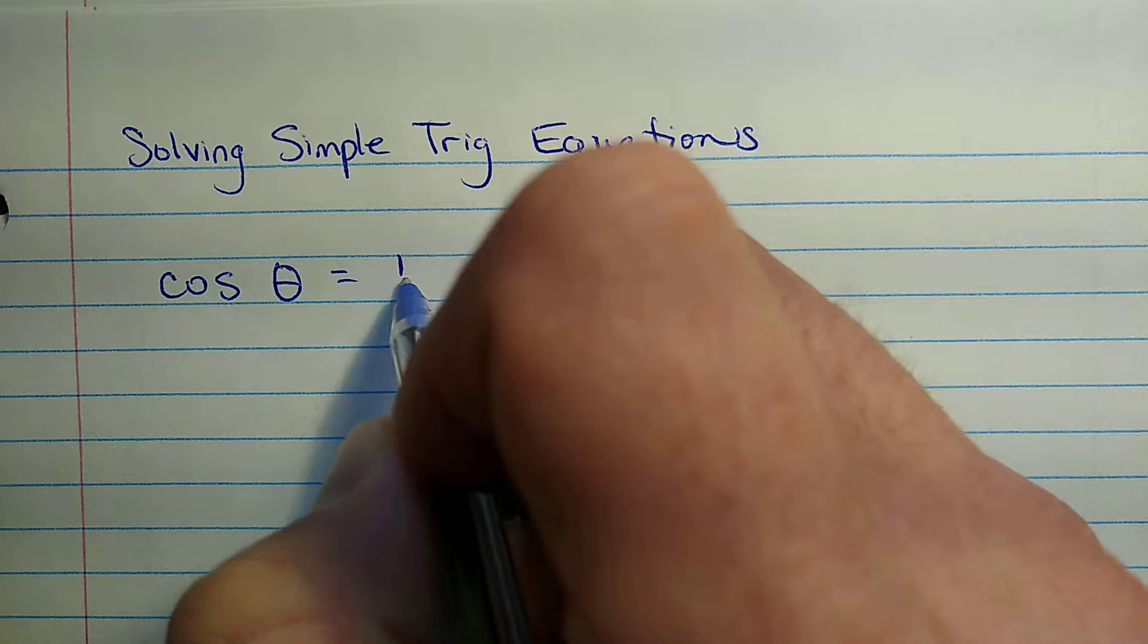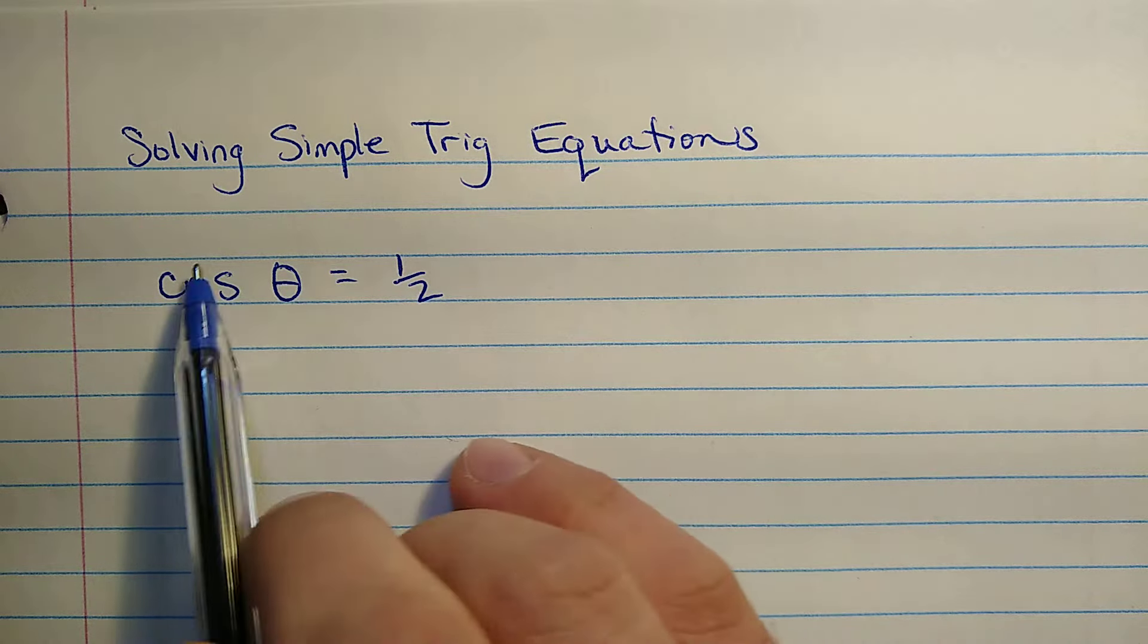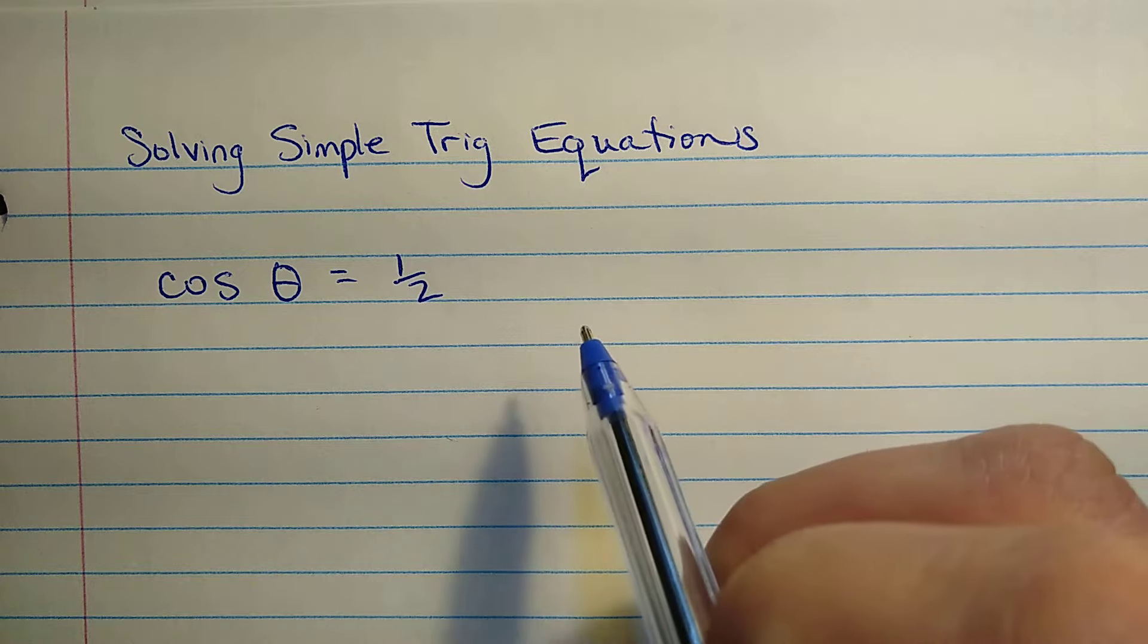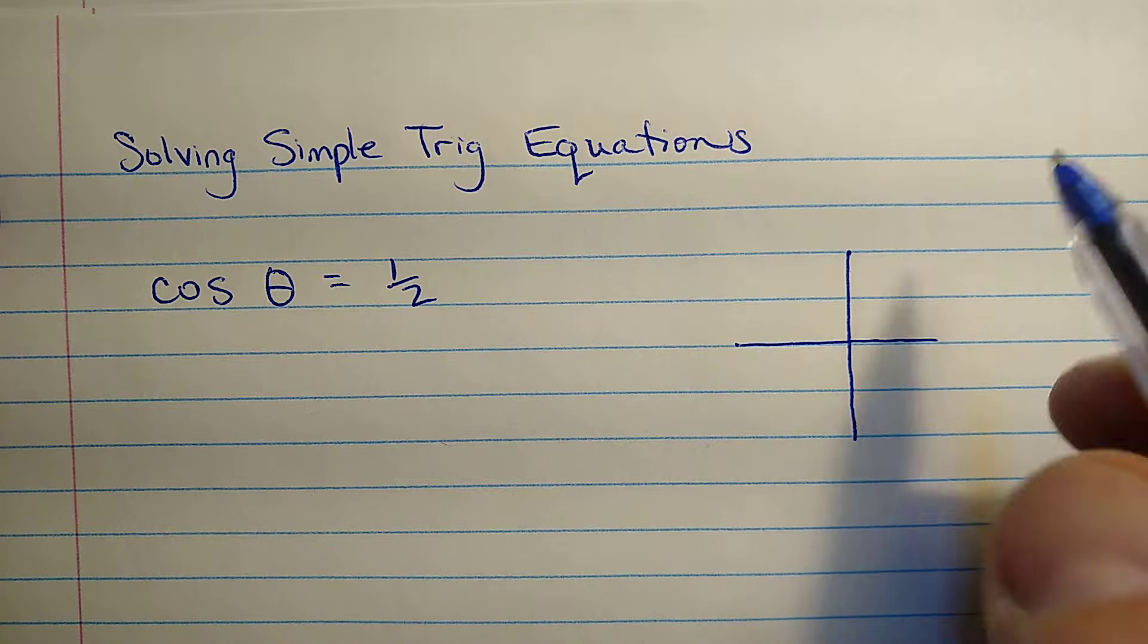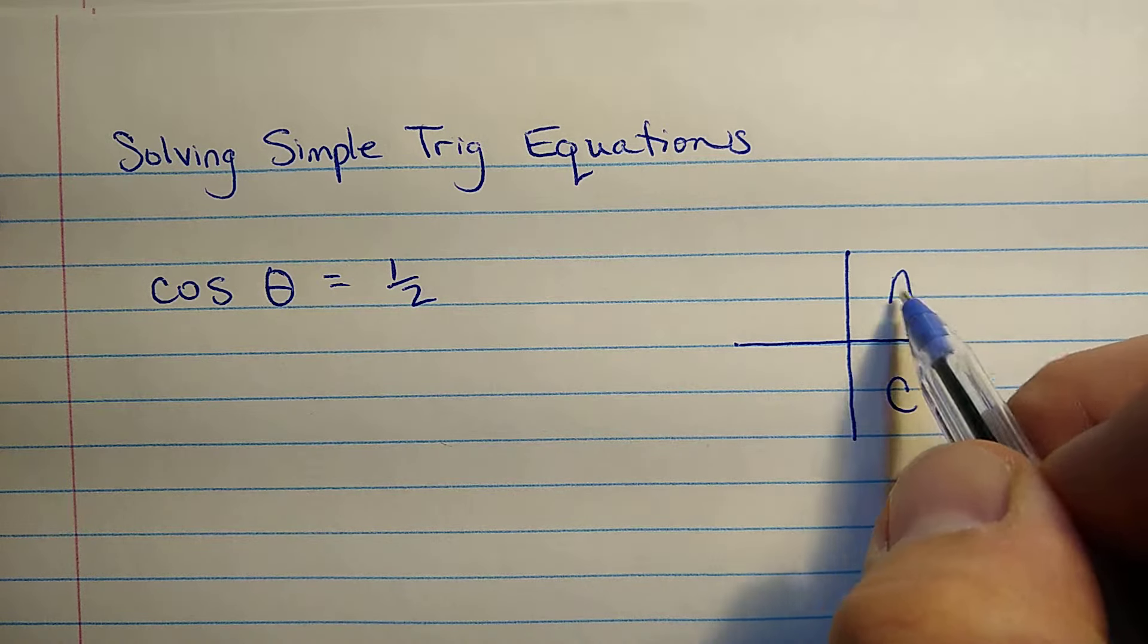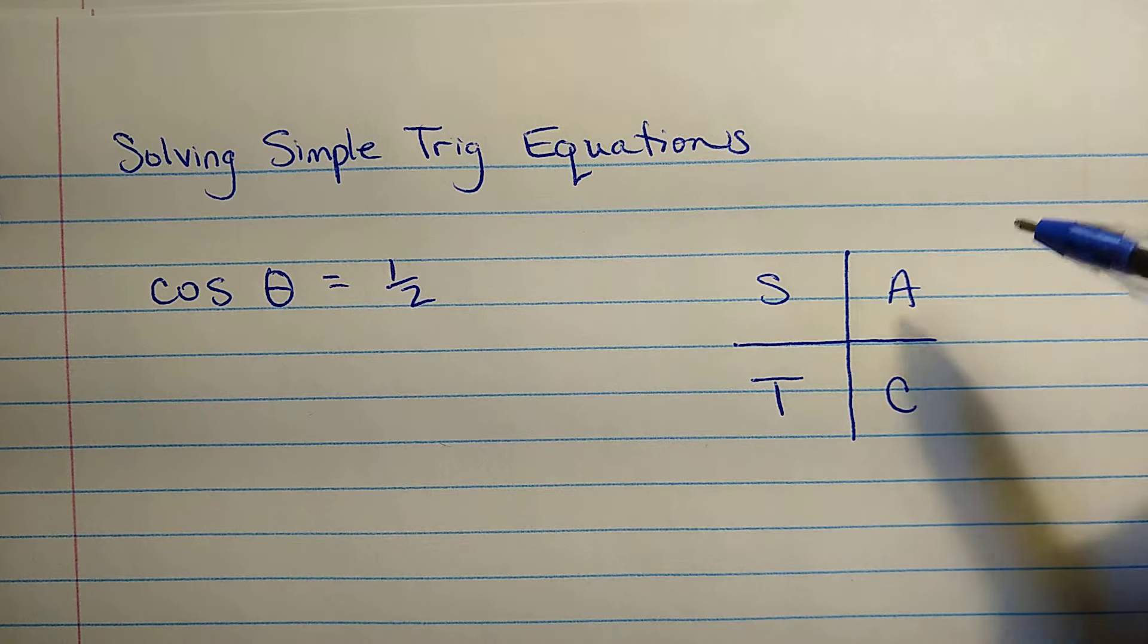So here we have cos θ equals one half. So cosine of theta, that's the function, and that has to be equal to one half. And I'm just going to remind you about the CAST rule. So if you don't already know some of these things, you might want to look into them. I'm just sort of explaining the process here rather than teaching you all of why this all works.